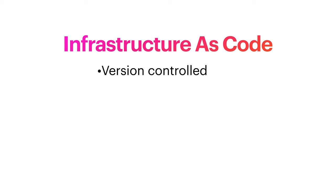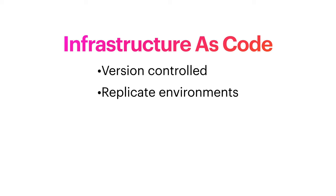If our infrastructure is defined as code, we can put it in version control — we can have reviews of it, track the history of what our infrastructure used to look like, all the great things that come with version control. We can deploy our infrastructure to different environments, like dev and production, and because it's defined as code, it's easy to replicate exactly what we have across environments.